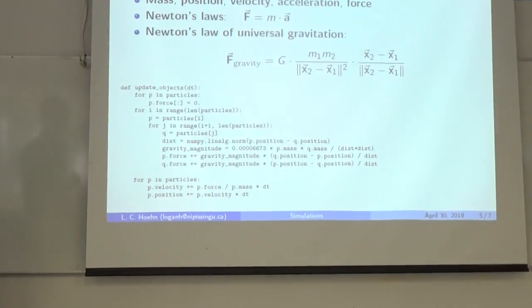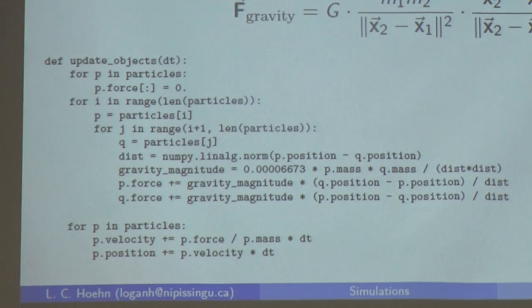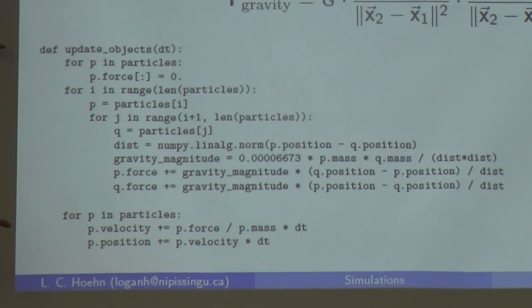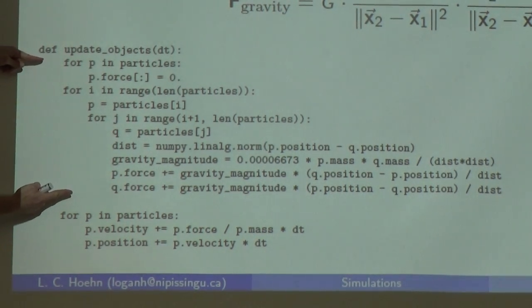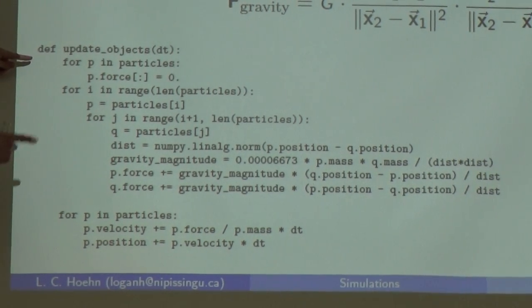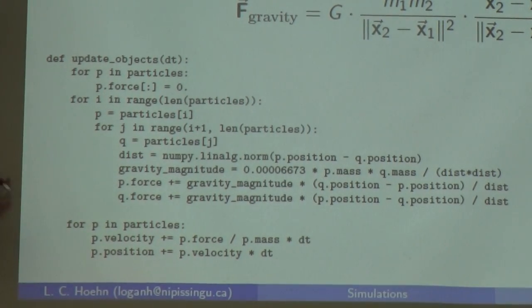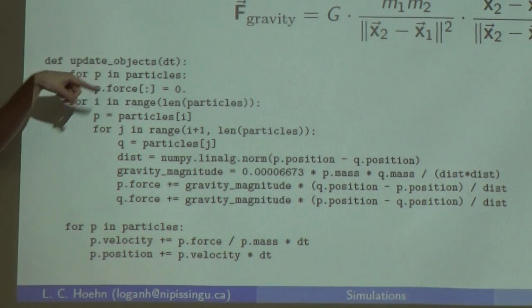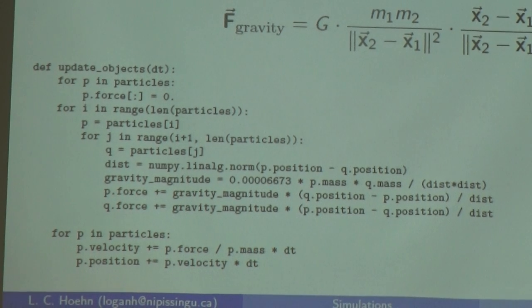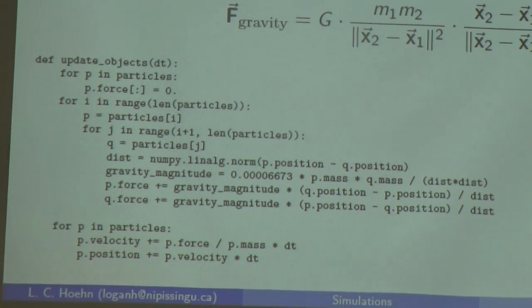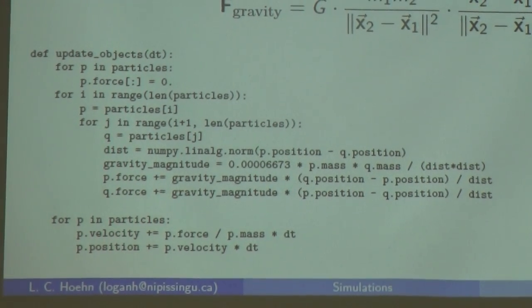Okay, so once again, you can calculate this, or you can program this with a very short segment of code to implement that model. So again, all this part here simply calculates the forces, the total force on each of those particles in the system. And then this part just updates the velocity and the position after a small time step. So again, you don't need to look and read and understand this code, I just want to give you the sense that it's very short and simple.